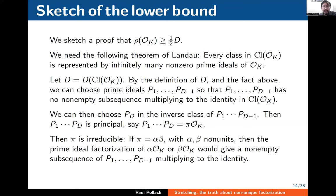Nowadays this would be thought of as a result in class field theory, but Landau was working before class field theory was really a theory. Let D be the Davenport constant of the class group. By definition, it's possible to pick D-1 elements of the class group with no subproduct being the identity. I pick primes P_1 through P_{D-1} from those classes using Landau's theorem — so no subproduct of those prime ideals is a principal ideal.